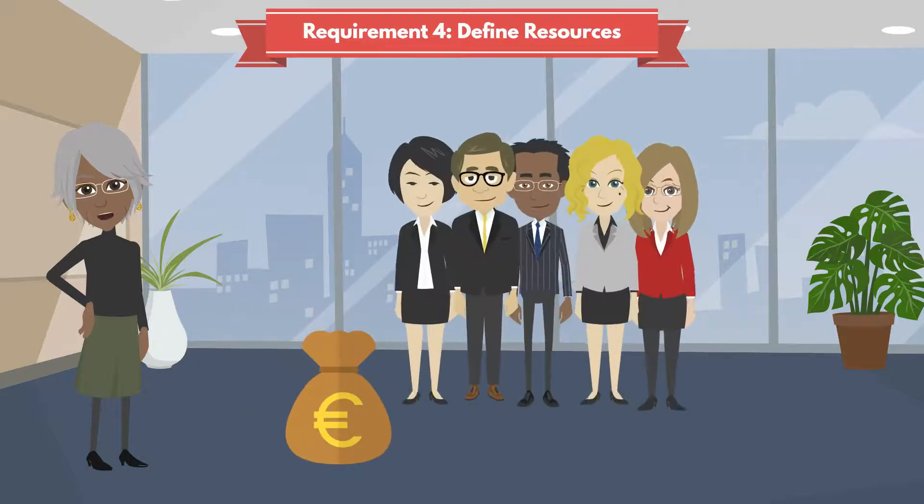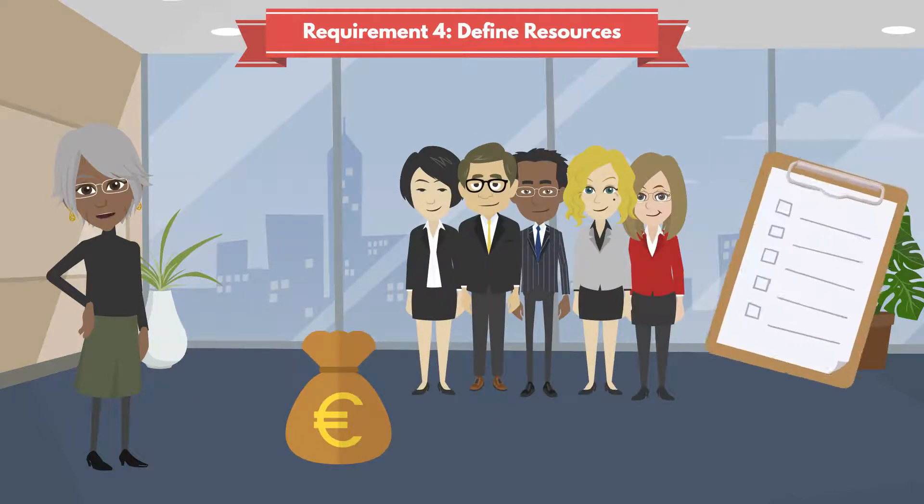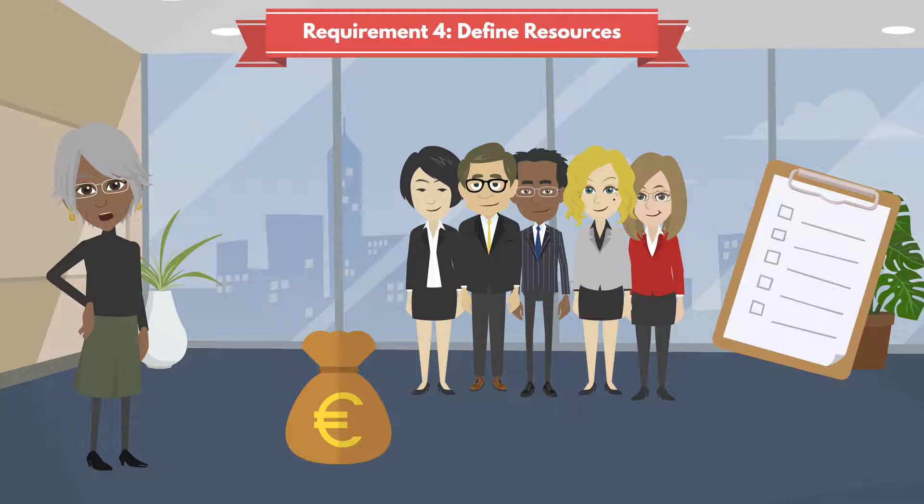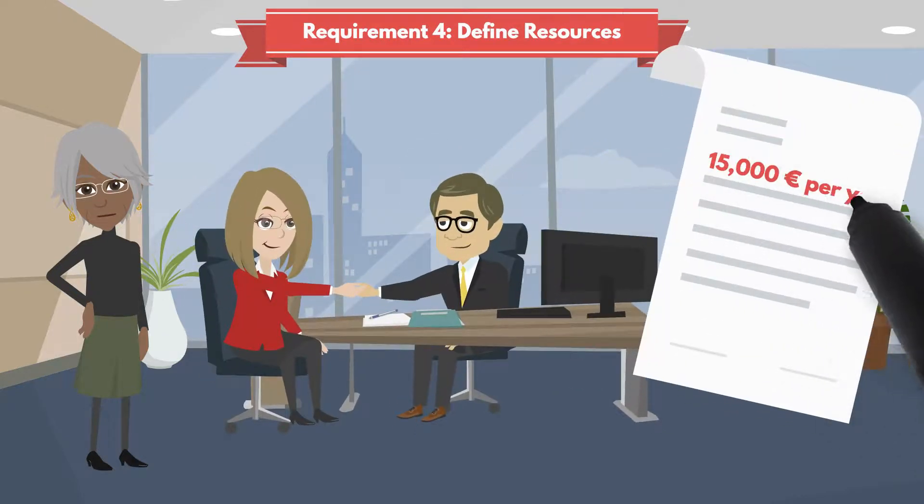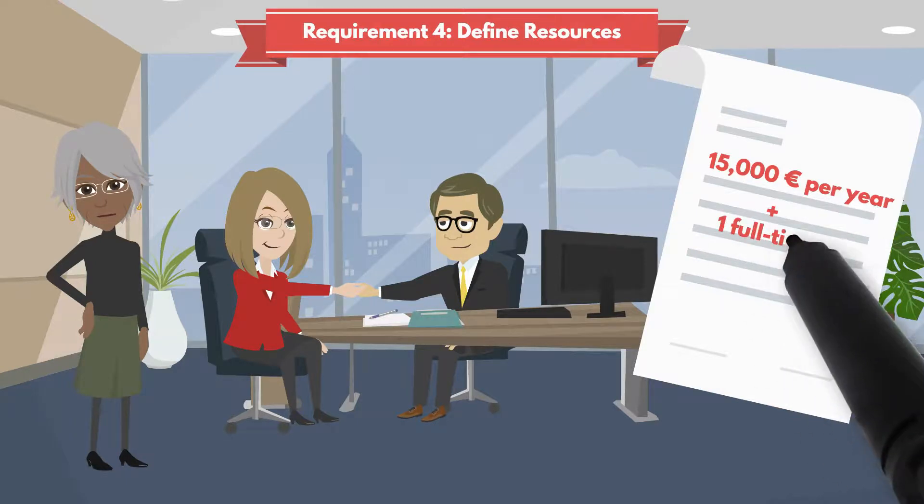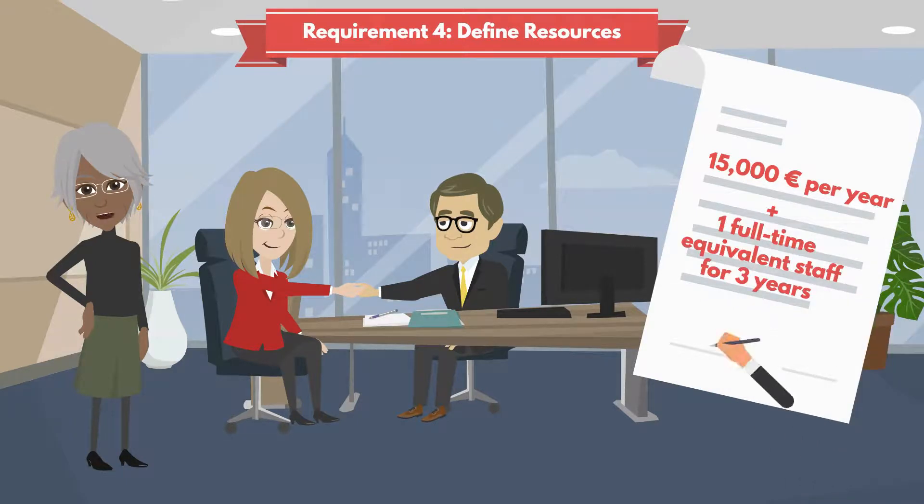You define the financial and staff resources needed to implement the planned gender equality measures. For example, a budget for gender equality measures of €15,000 per year, plus one full-time equivalent staff for three years.